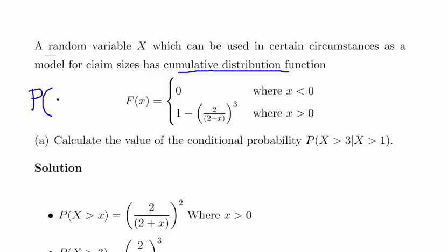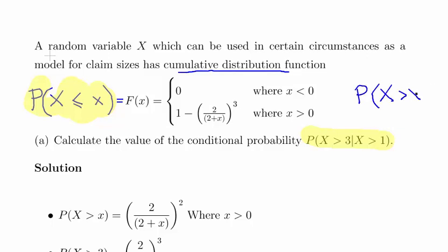We're told we have the cumulative distribution function where P(X ≤ x) for some particular observation — capital X is the variable name. This is the complement of what we're looking for: P(X > 3) and P(X > 1), which are the complement expressions of the CDF where x is either 3 or 1. As a remark, since this is a continuous random variable, the equality component is assumed to equal zero, so it's not particularly important.